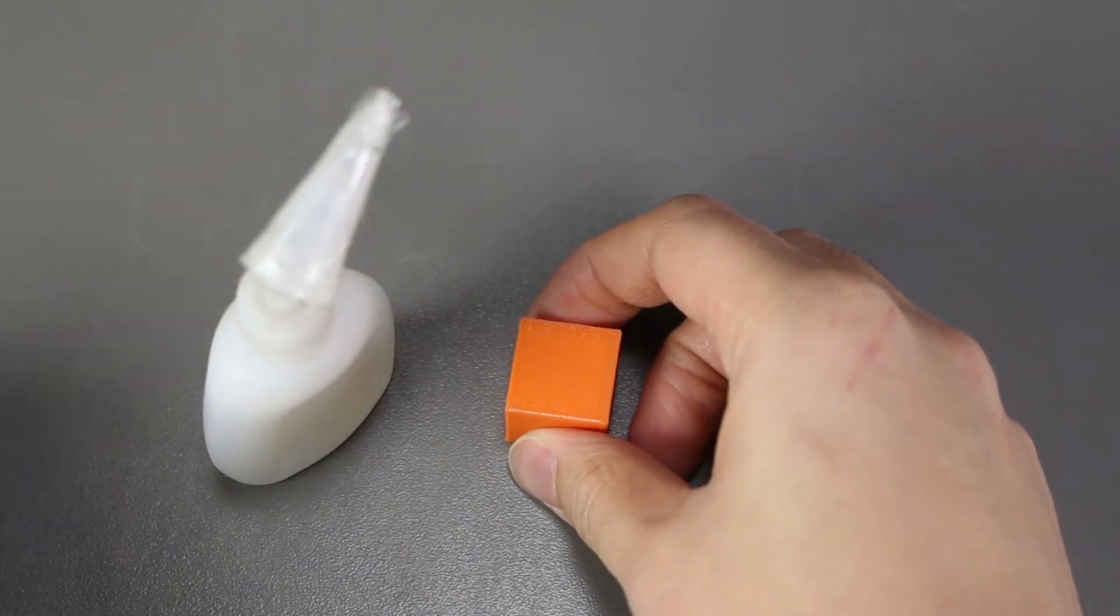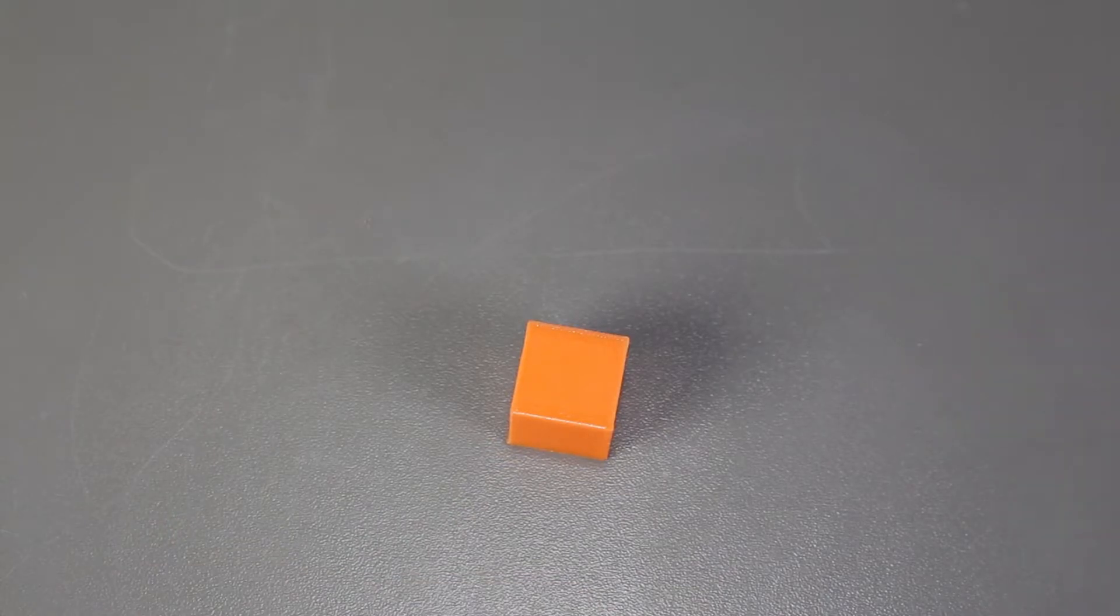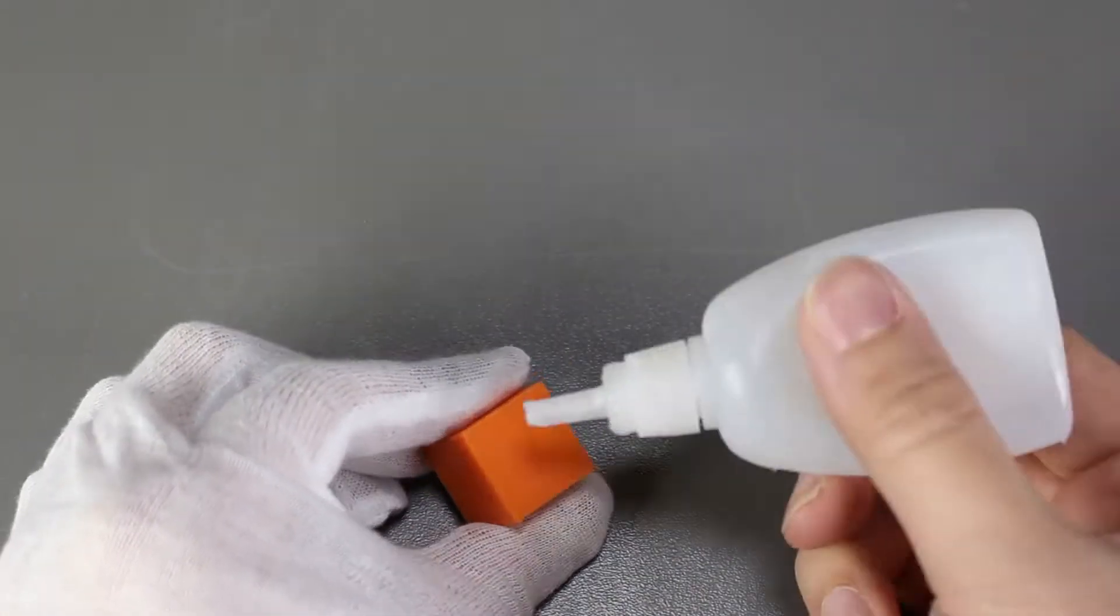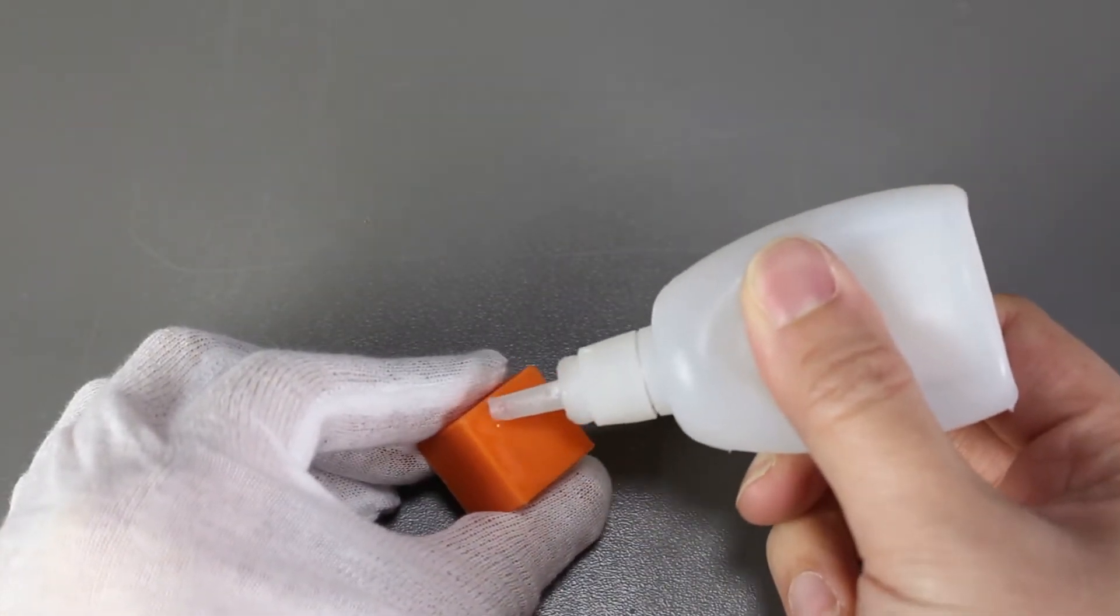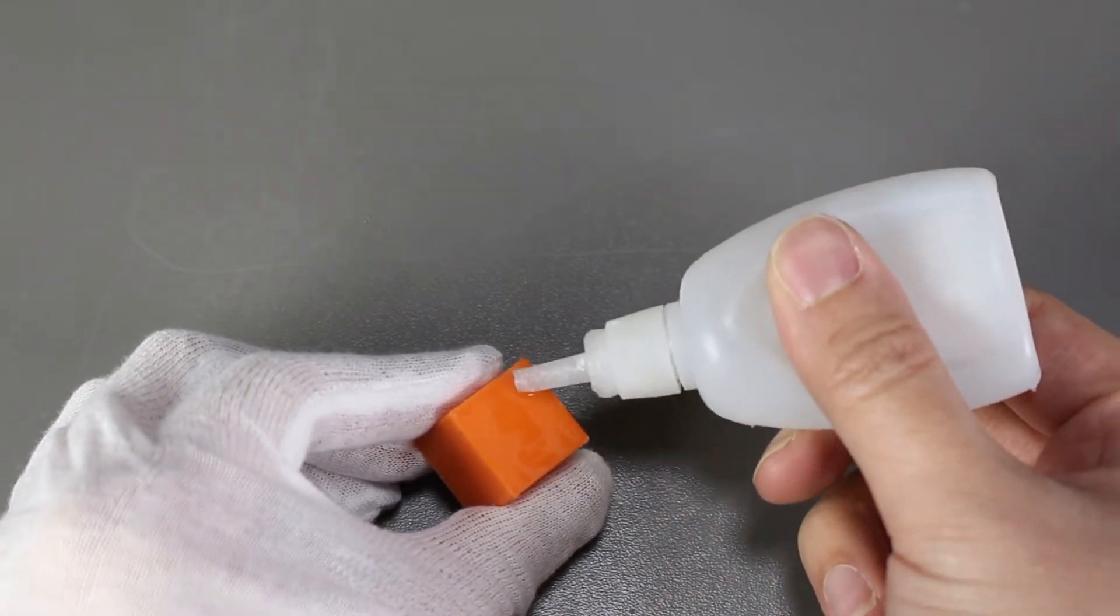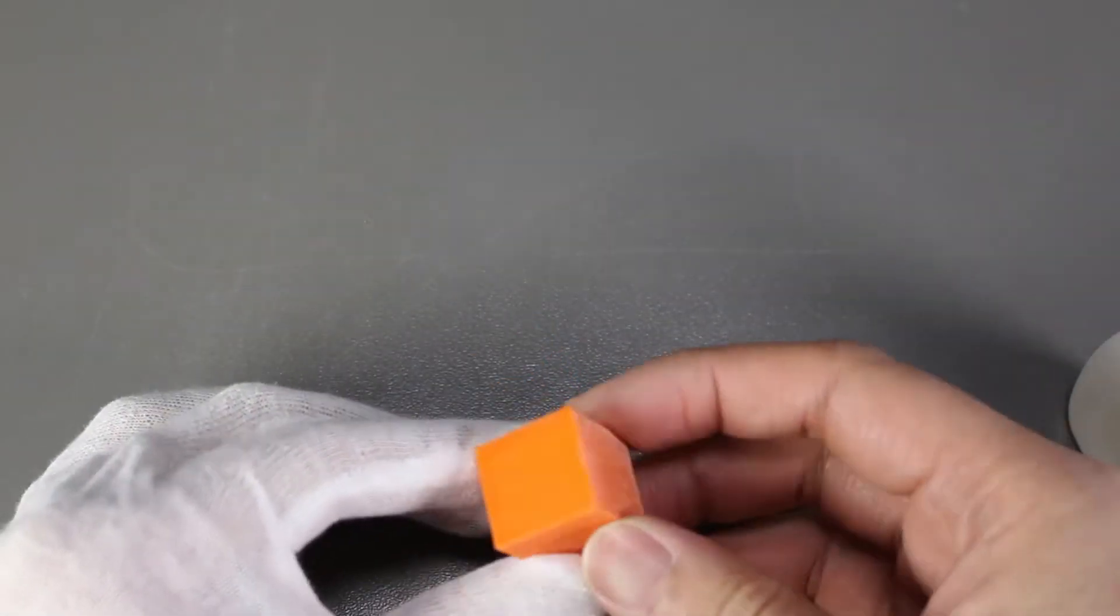You simply cover the side of the part with superglue and then let it dry. I switched to a print that was easier to post-process. The superglue should seep into the individual layers and smooth out the surface as it is creating an extra layer on top.